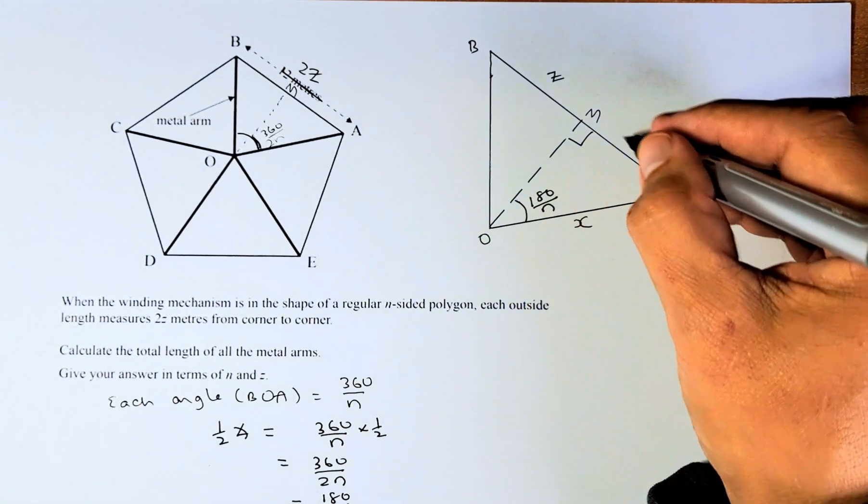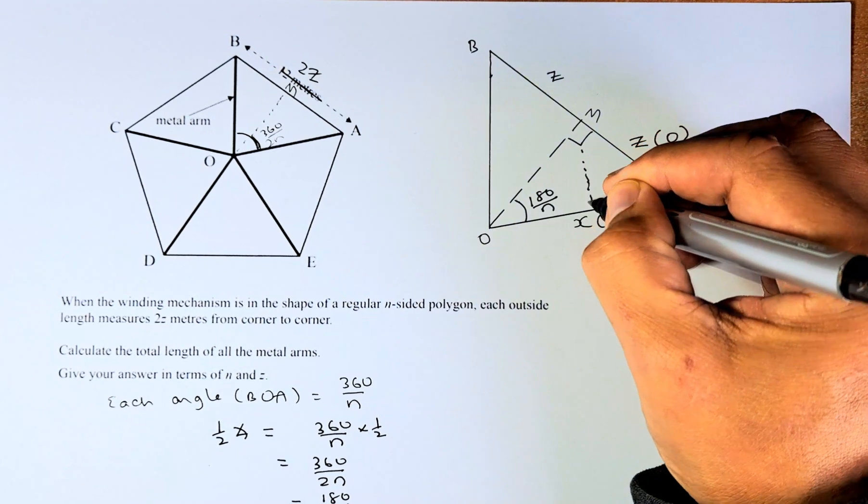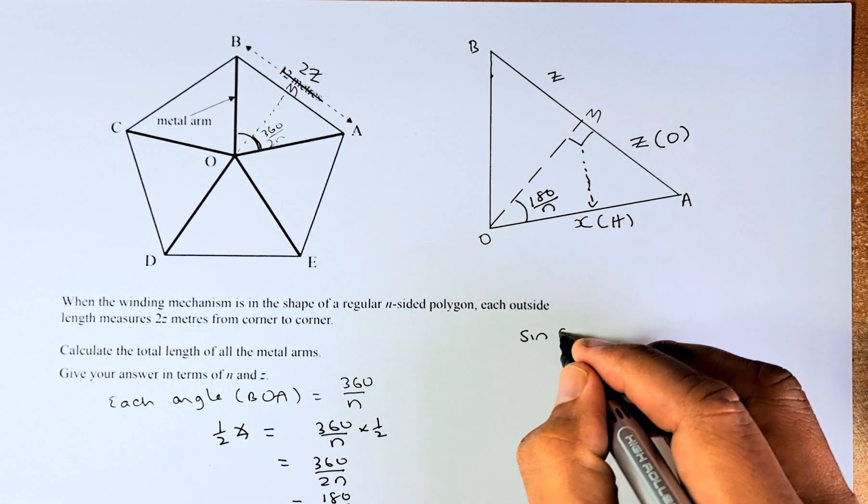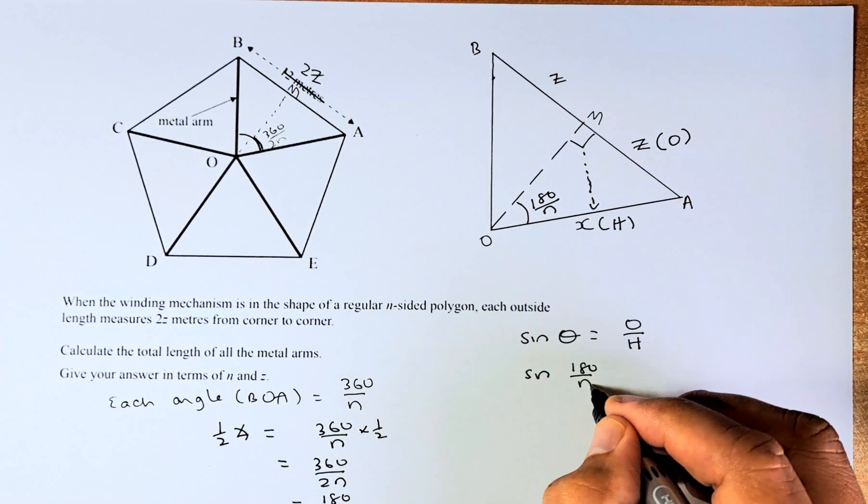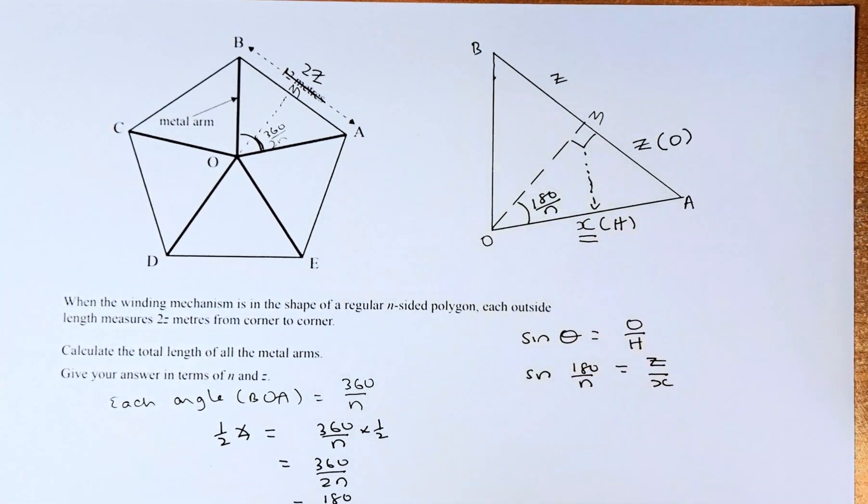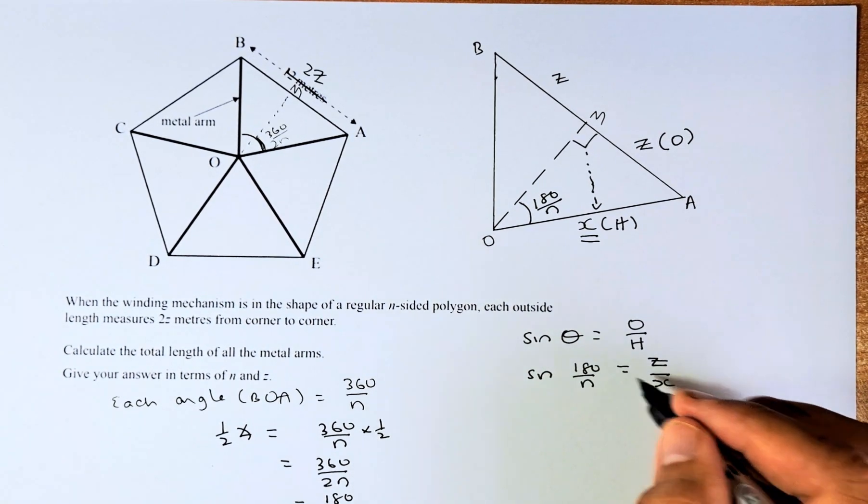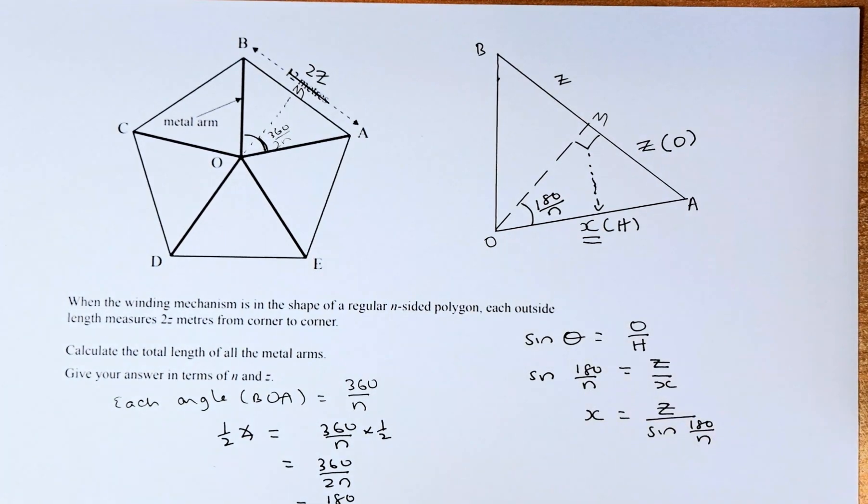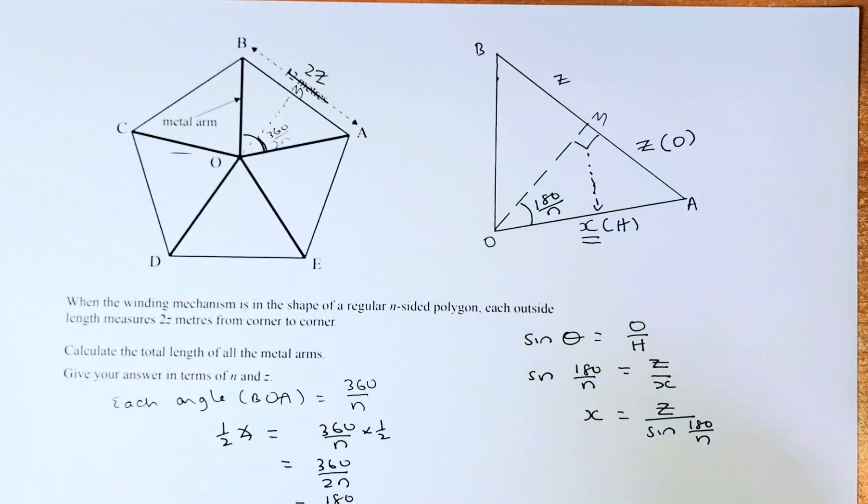So now we are going to solve it again using this triangle. This is the opposite and this is the hypotenuse because the longer side is the one opposite the 90 degree. So now you know that we are going to put in into the SOHCAHTOA because the O and H is going to be sine. Sine theta equals to opposite over hypotenuse. Now we substitute the value. Sine 180 over N, that is the angle there, equals to opposite which is Z over X. Remember we are trying to find X. So to get X we just need to swap the numbers. So X equals to Z divide by sine 180 over N.